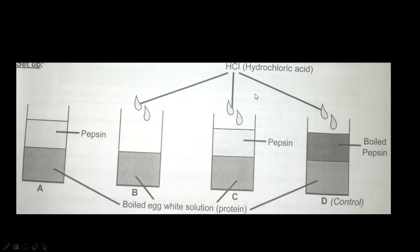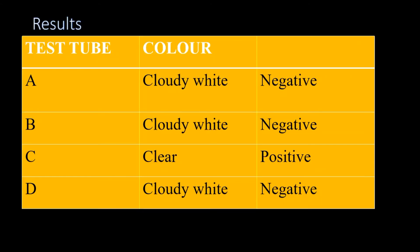Now let's look at where we get a positive reaction and where we get a negative reaction. Before we go to the results, note that in our stomach we have hydrochloric acid, and pepsin is also found in the stomach. Coming to our results: test tube A will be cloudy white — that indicates a negative result. Test tube B will also be cloudy white — negative. Test tube C will be clear, indicating a positive reaction that occurs within seconds. Test tube D will change from cloudy white — also negative.